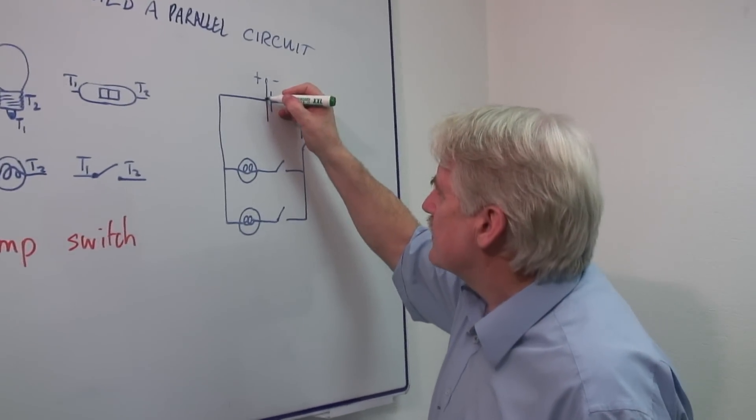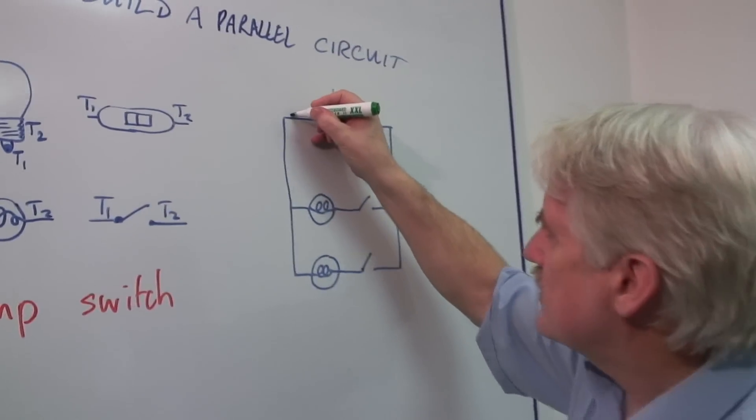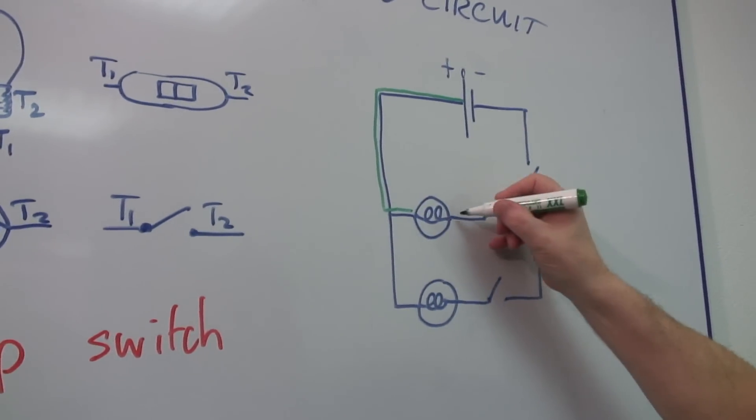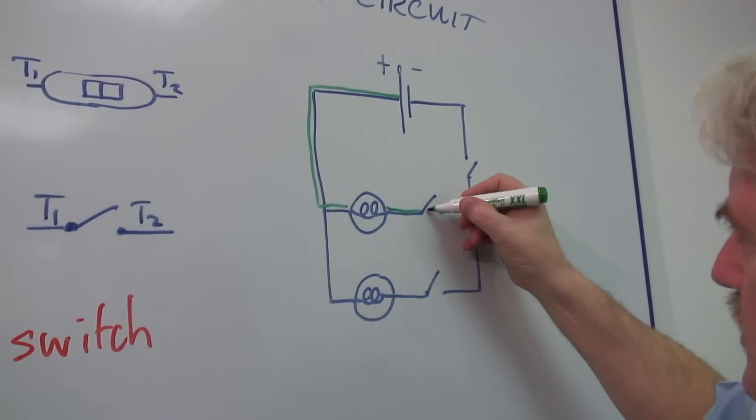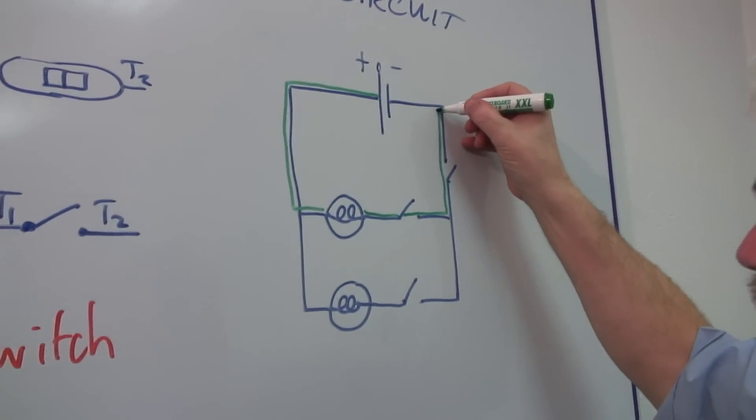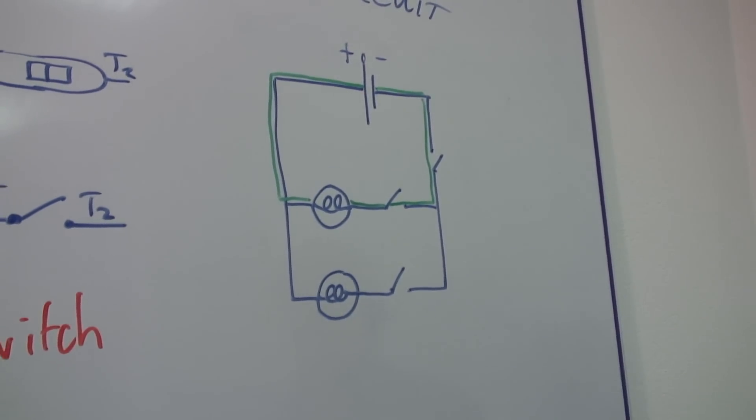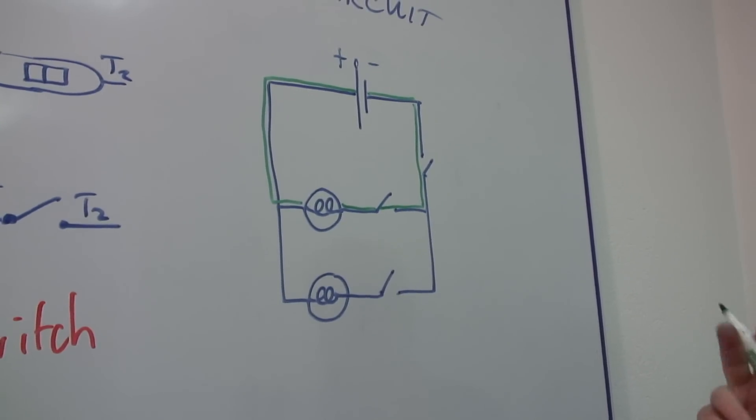Here is the first circuit. I start here, I go down to here, I go through this lamp, I go through this switch, through the other switch, and back there. That is a series circuit. So that's one of my circuits.